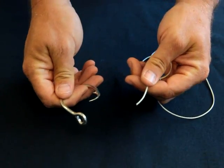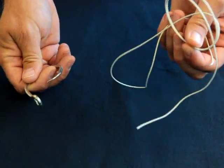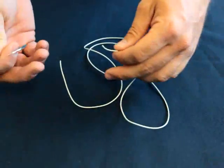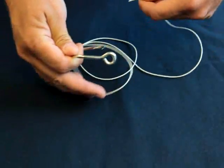Today we're going to show you how to snell a hook with a piece of leader material. This is not an actual main line, it's a piece of leader material because you'll need two tag ends to work with.